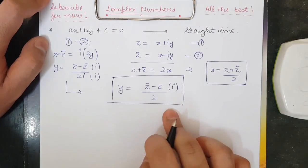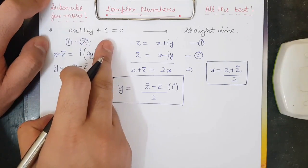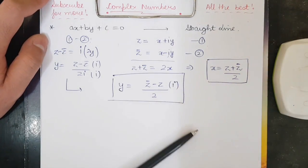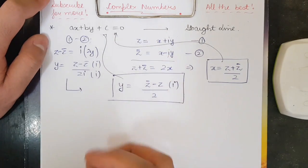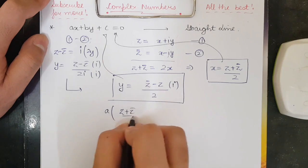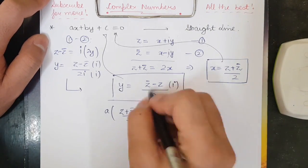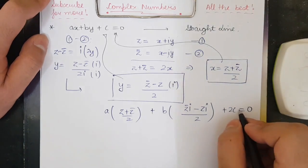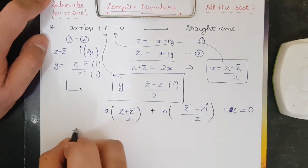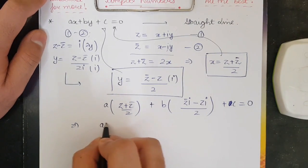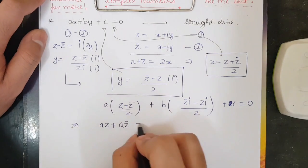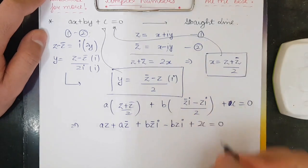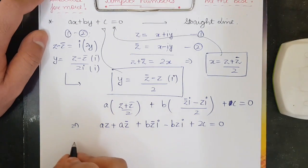Note that a, b, c are real numbers because the Cartesian plane is a real numbers plane. Substituting these values of x and y into the straight line equation ax + by + c = 0, we get: a·(z + z̄)/2 + b·(z̄·iota − z·iota)/2 + c = 0. Multiplying both sides by 2: a·z + a·z̄ + b·z̄·iota − b·z·iota + 2c = 0.